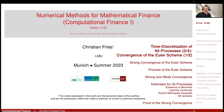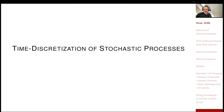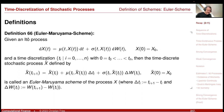Welcome to Numerical Methods. We have moved to a new chapter: time discretization of stochastic processes. In the last session, I defined a few time discretization schemes for Itô stochastic processes. The most important one is the Euler scheme, or Euler-Maruyama scheme.